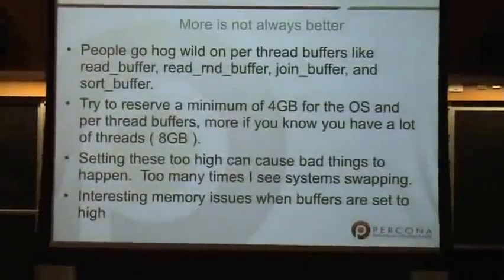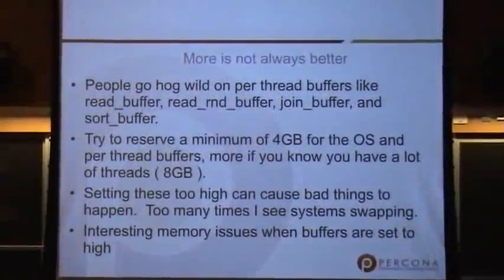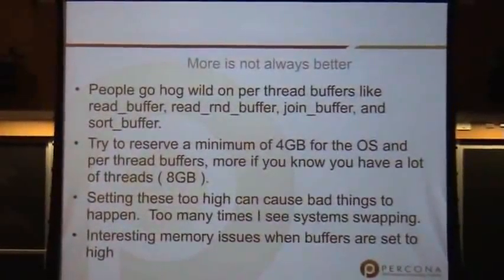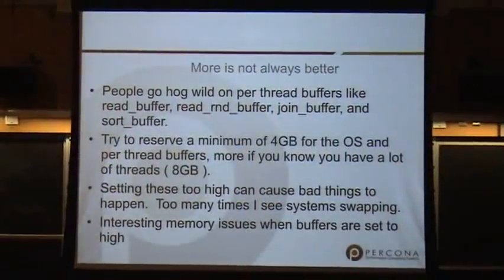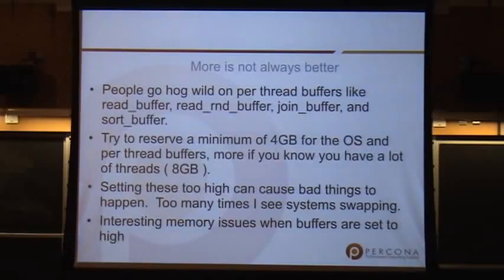For instance, you have the per-thread buffers — the read buffer, the read-rate buffer, the join buffer, the sort buffer. These can be allocated per-thread in MySQL. If you set these to 128 megs and all of your threads need that, that's quite a bit of memory. You're going to kill yourself in performance. I've seen this a few times.